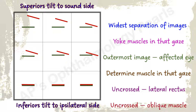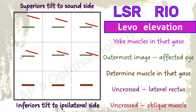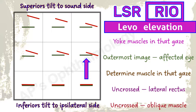Here the maximum separation of images is in levo elevation. The yoke muscles acting in levo elevation are the left superior rectus and the right inferior oblique. Red is the outermost image, so the right eye is involved — there is a right inferior oblique palsy. This is an uncrossed diplopia, so the oblique checks out. Tilt is towards the ipsilateral right side, so the inferior checks out.